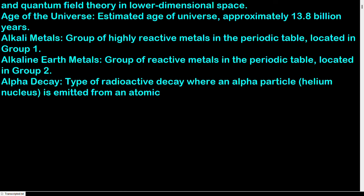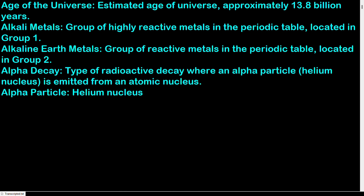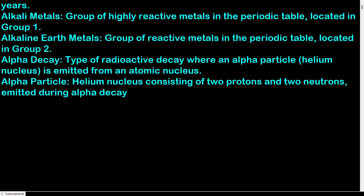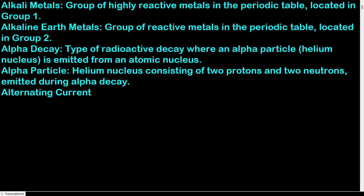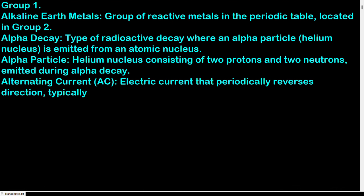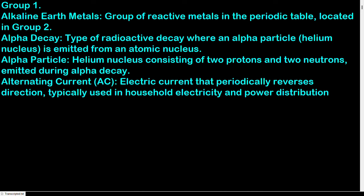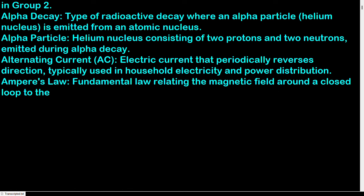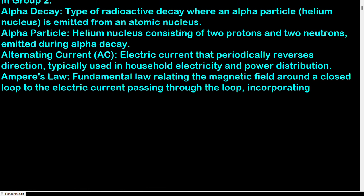Alpha decay: type of radioactive decay where an alpha particle (helium nucleus) is emitted from an atomic nucleus. Alpha particle: helium nucleus consisting of two protons and two neutrons, emitted during alpha decay. Alternating current (AC): electric current that periodically reverses direction, typically used in household electricity and power distribution.